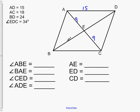And then BD is 24, so this would be 12 and 12. It's just half of 24.